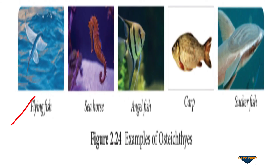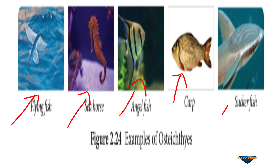This is the Flying Fish — you can see its fins, it looks like a bird. And this is the Seahorse. This is the Angel Fish, which you have seen in fish tanks. And this is a Suckerfish. These are the examples of Osteichthyes.